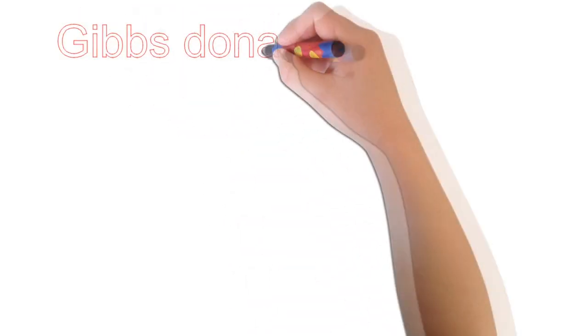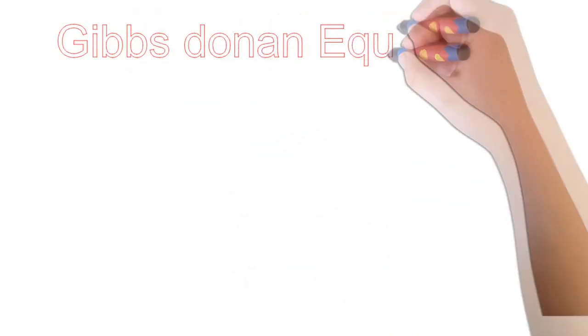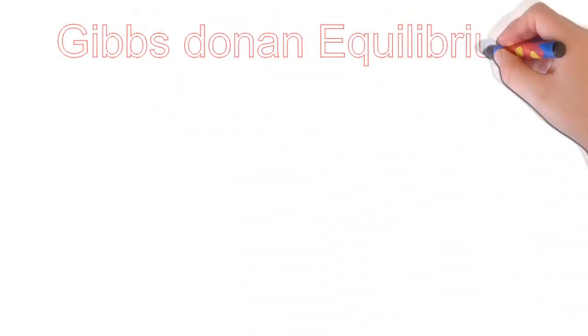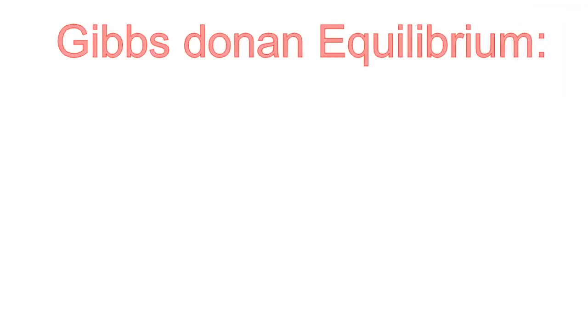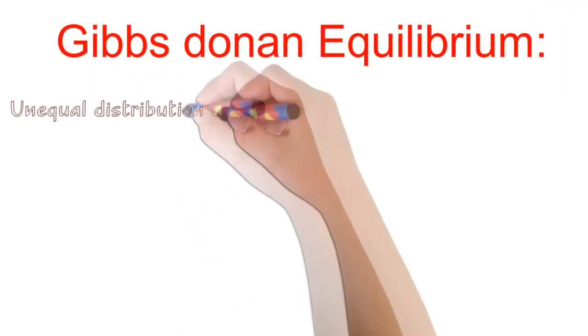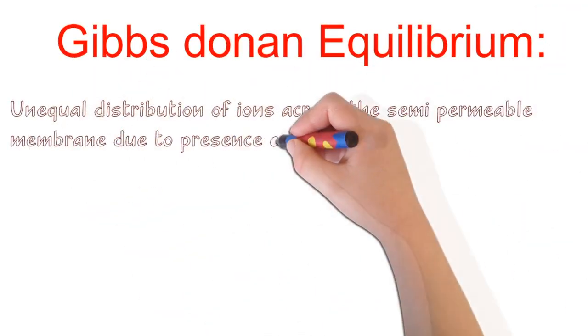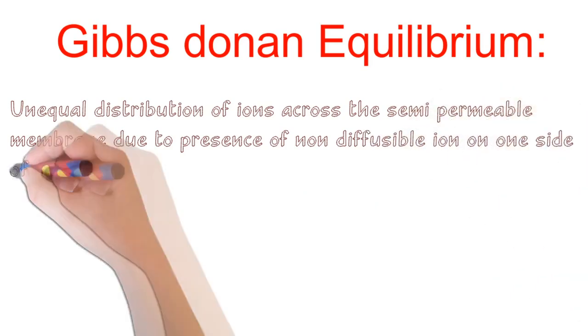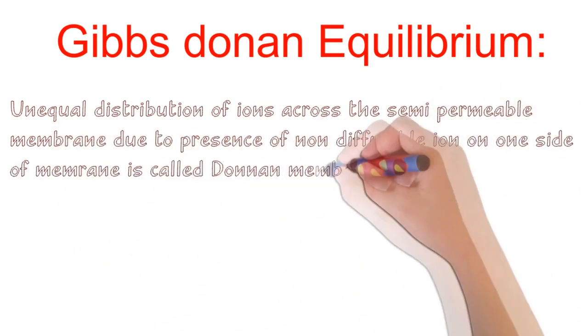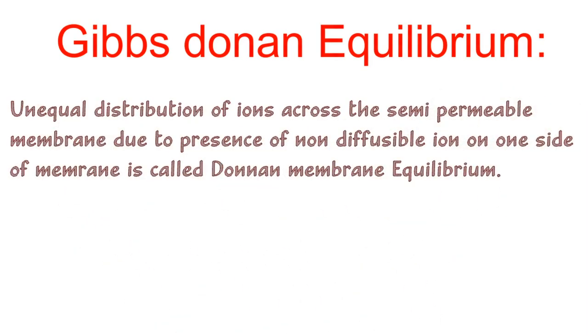Gibbs-Donnan equilibrium is a special type of equilibrium in which there is unequal distribution of ions across the semi-permeable membrane, due to the presence of a non-diffusible ion on one side of the membrane.